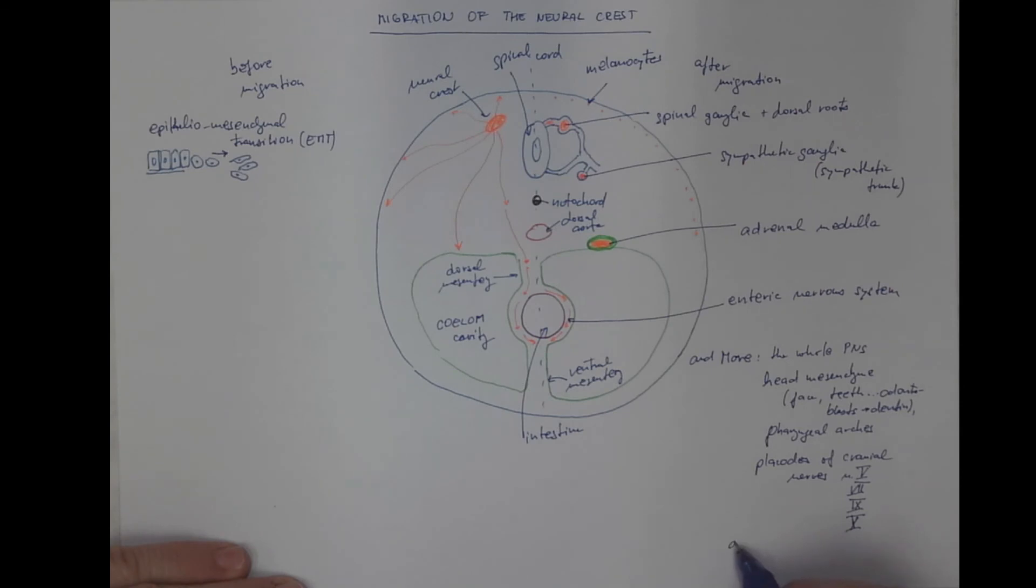And also, for example, the aortic pulmonary septum that contributes to division of the outflow part of heart ventricles and helps to separate the aorta from the pulmonary trunk.